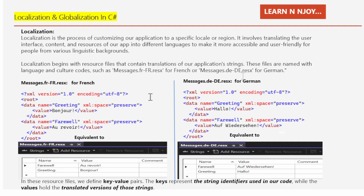For German we use Messages.de-DE.resx. Let's look at the French and German resource files. The file looks like an XML file — XML version 1.0 with an encoding. Inside the root element we have two data elements. The first data element has the name attribute 'greetings' and the value written in French: 'Bonjour', meaning good morning.